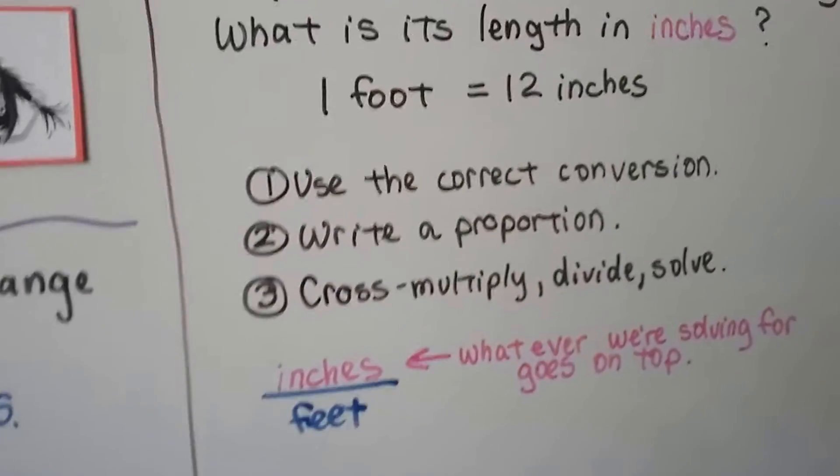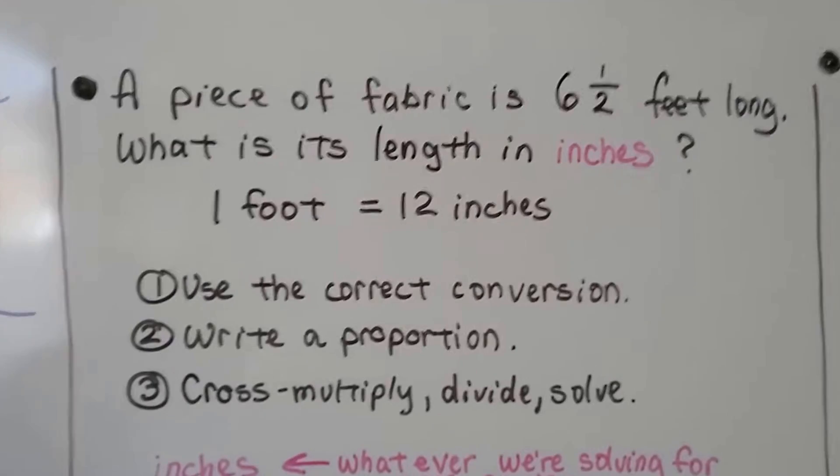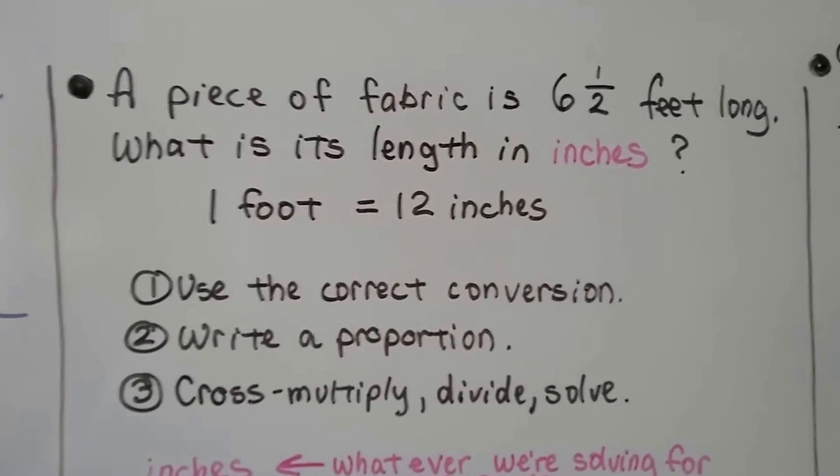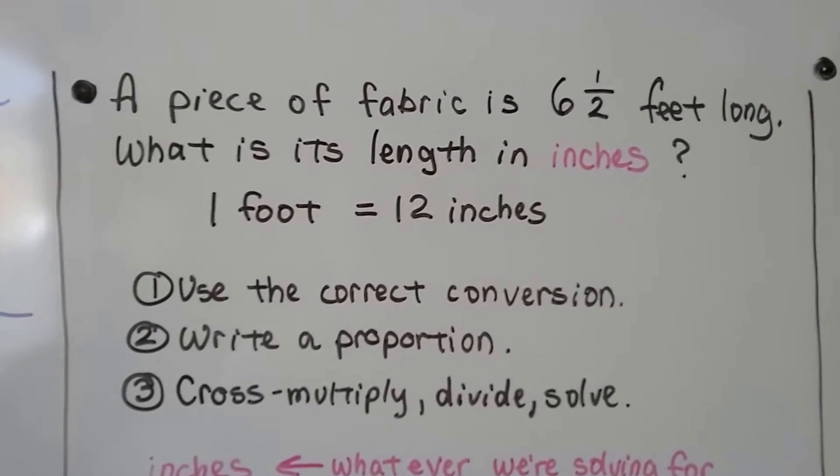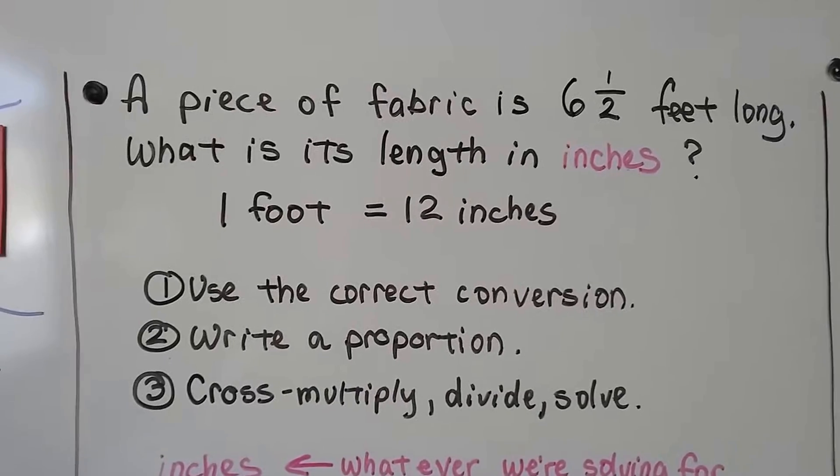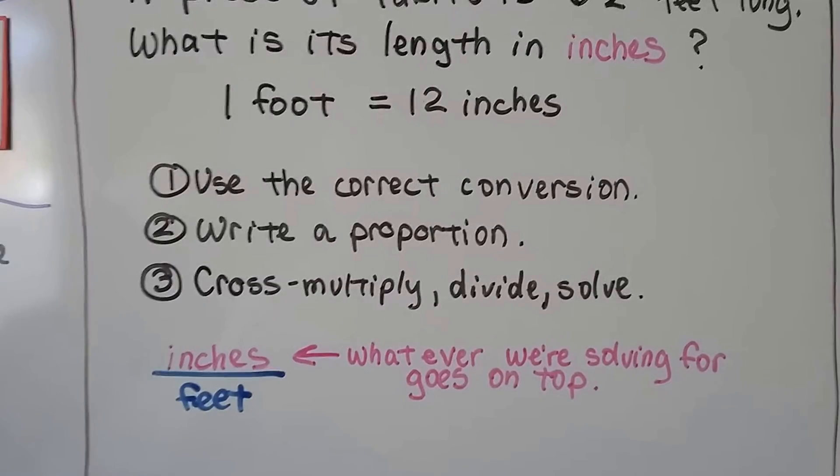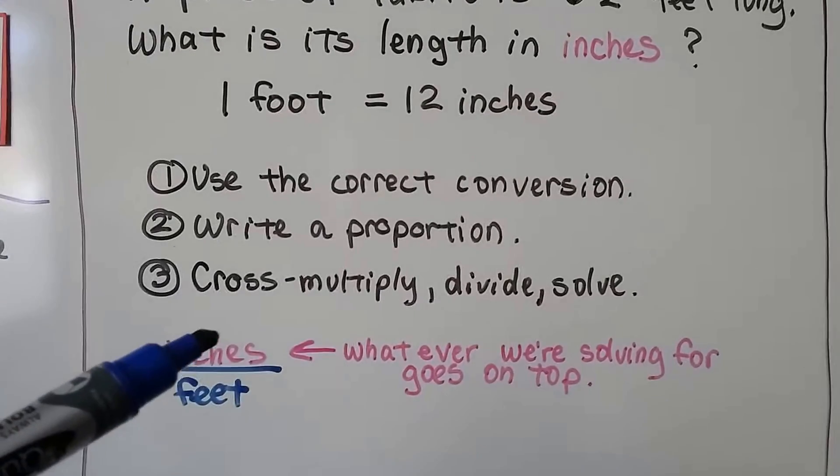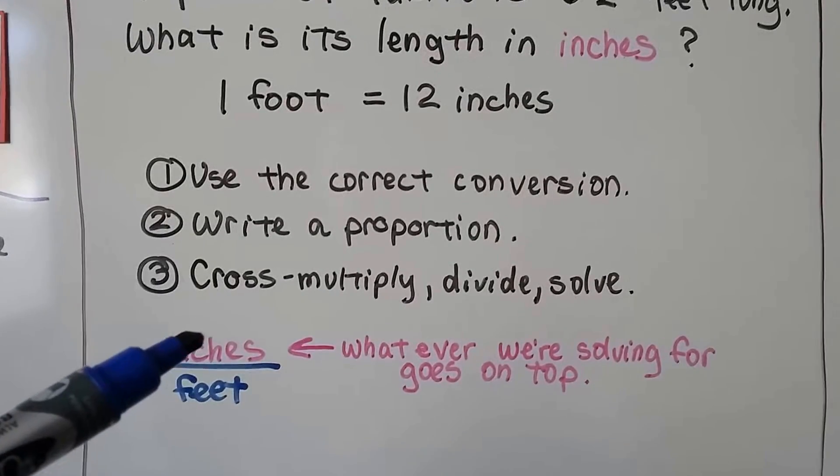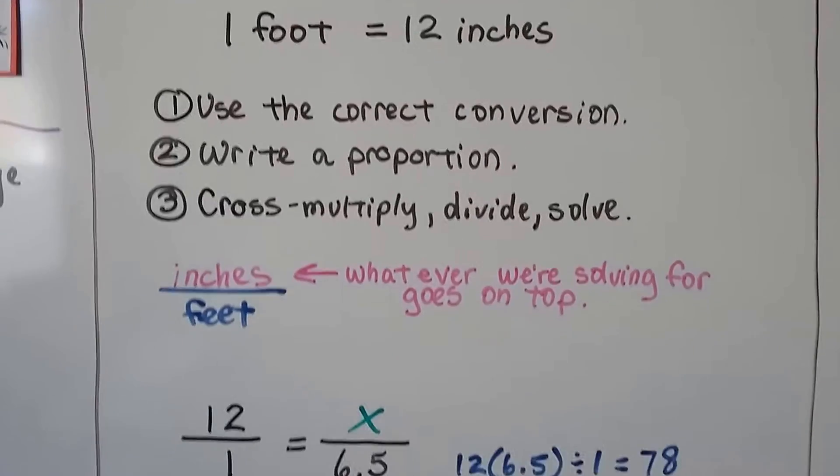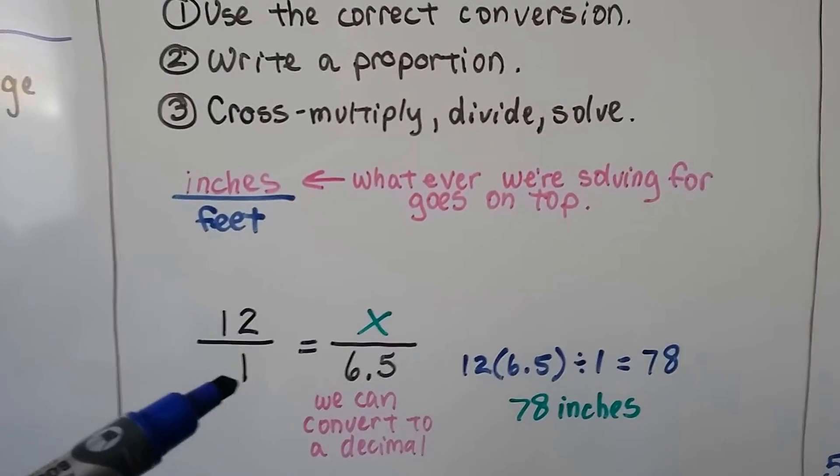Here's an example. A piece of fabric is 6 1⁄2 feet long. What is its length in inches? So now we're looking for inches, and 1 foot equals 12 inches. We use the correct conversion, we write a proportion, and we cross-multiply, divide, and solve. Because we're looking for inches, we're going to have inches over feet. The inches is what we're looking for, that's the numerator. We know 12 inches is 1 foot.